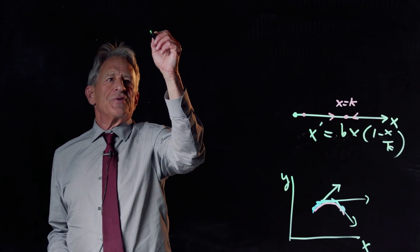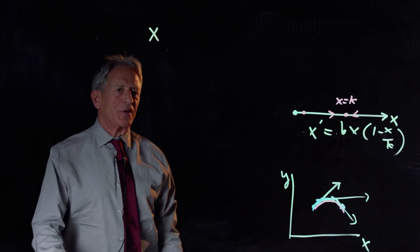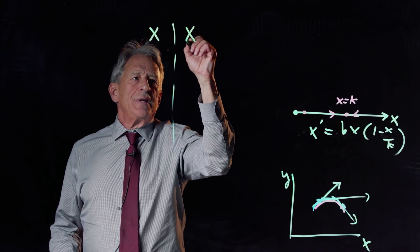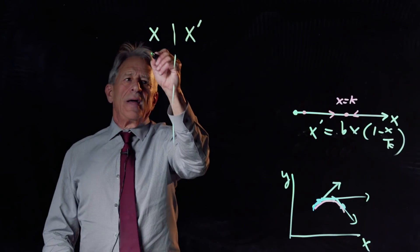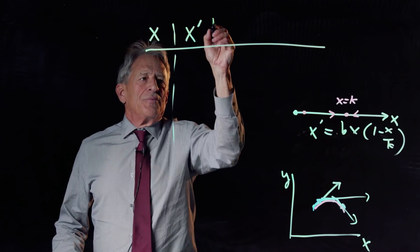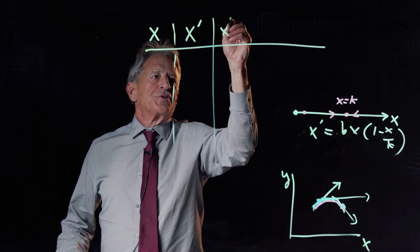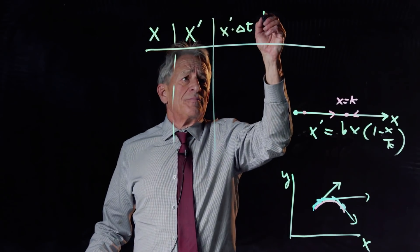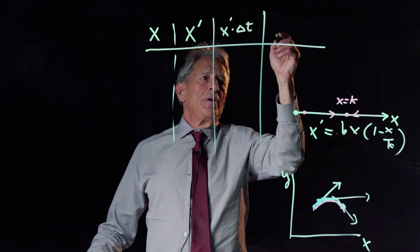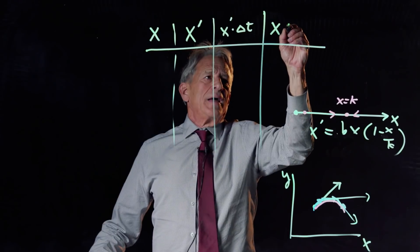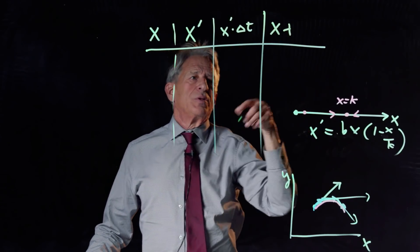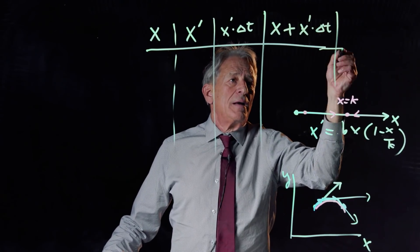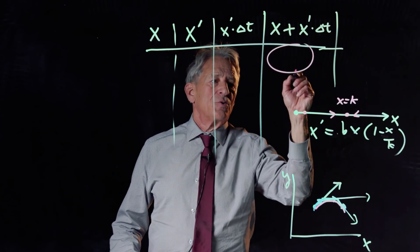And the first column in the spreadsheet is going to be your location. The second column is going to be the change vector at that point. The third column is going to be the change vector at that point times your little time step delta t. The fourth column, we are now going to take x and add to it. We're going to take column 1 plus column 3. It's going to be x plus x prime times delta t. And then that is going to be your next x.